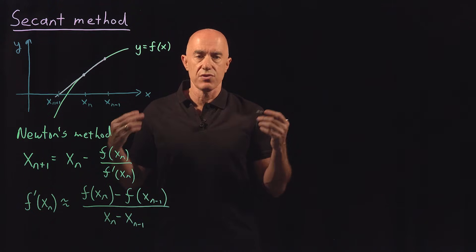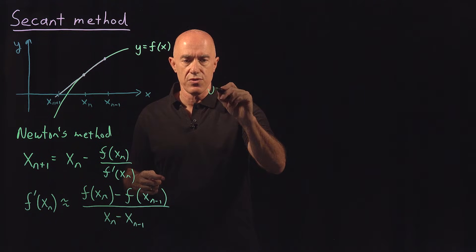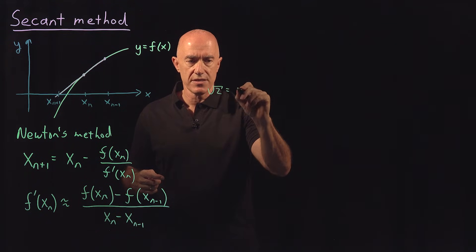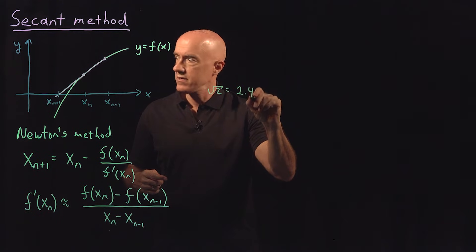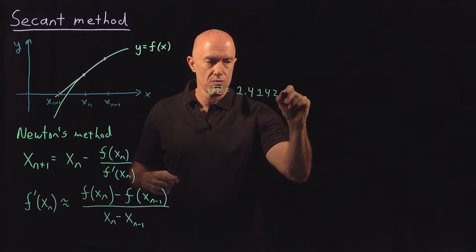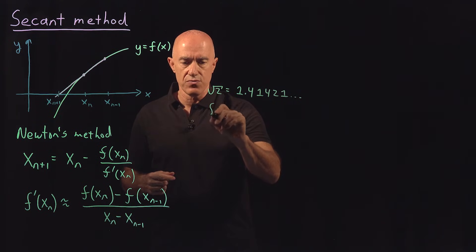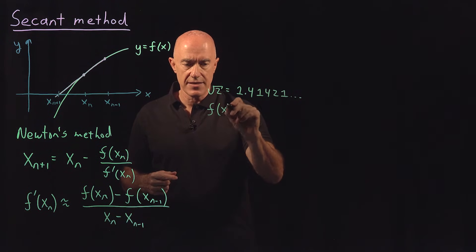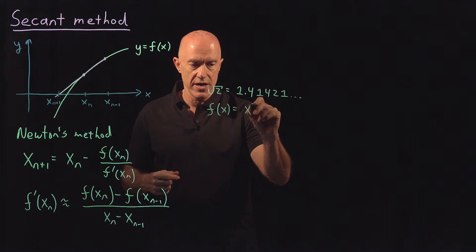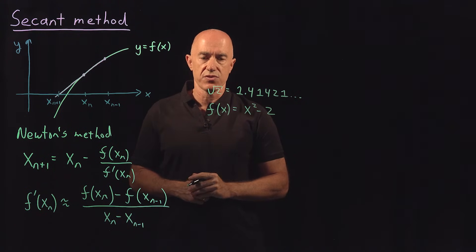We can try to compute the square root of 2 again. Remember, the square root of 2 is 1.41421. And the function that we want to find the root of is f(x) = x² - 2. So the solution to this is the square root of 2.